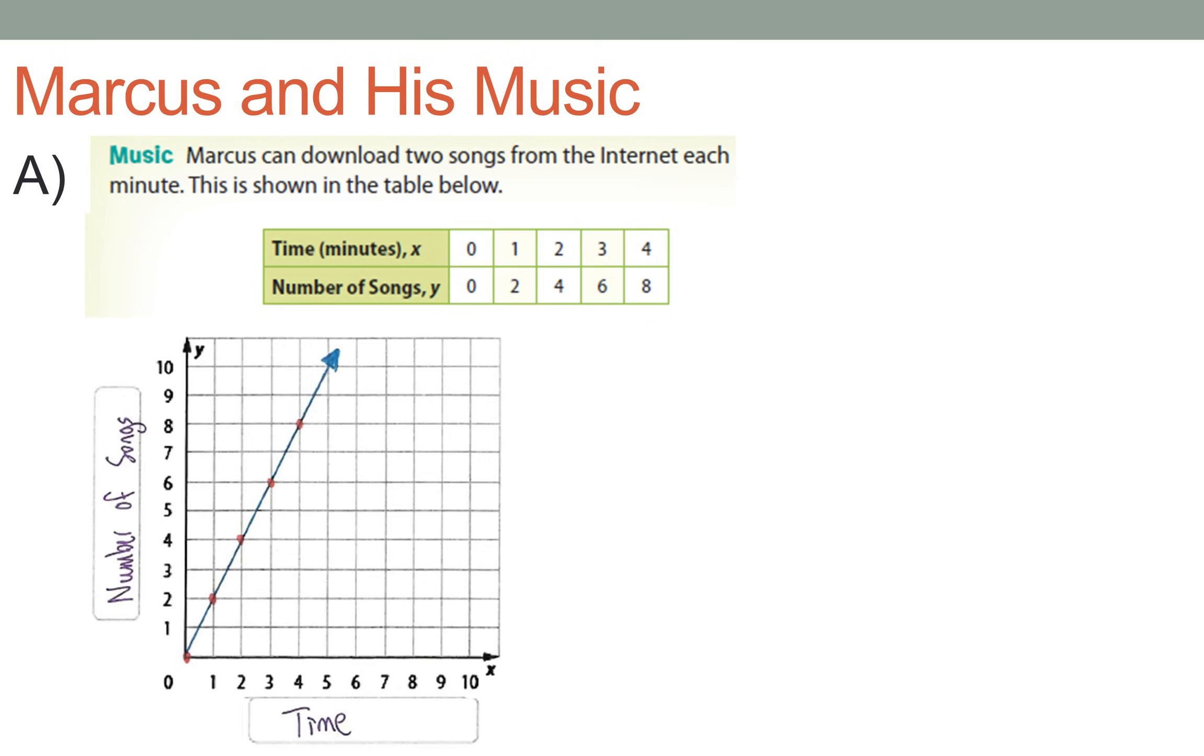Now there's several things that you can see here that are important. First, the graph or the line is linear. It is straight. What does that mean? That means that the relationship is proportional. And if the relationship is proportional, the rate of change is actually constant. This is really important.